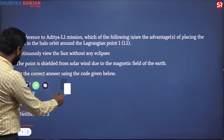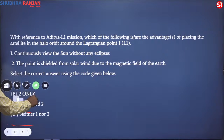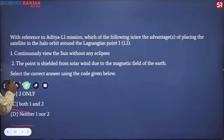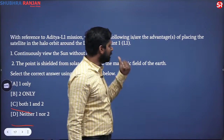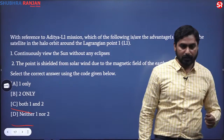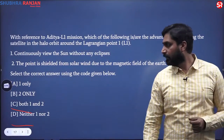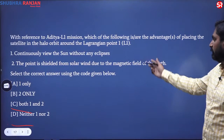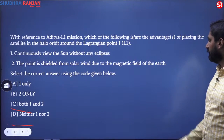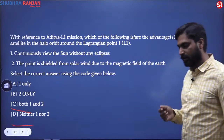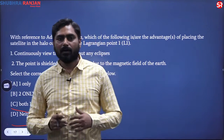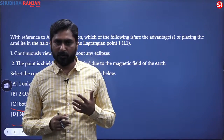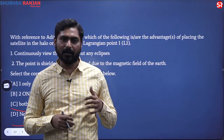This question says: with reference to the Aditya L1 mission, which of the following are the advantages of placing a satellite in the halo orbit around the Lagrangian point L1? You need to have some conceptual understanding of L1 or Lagrangian points.